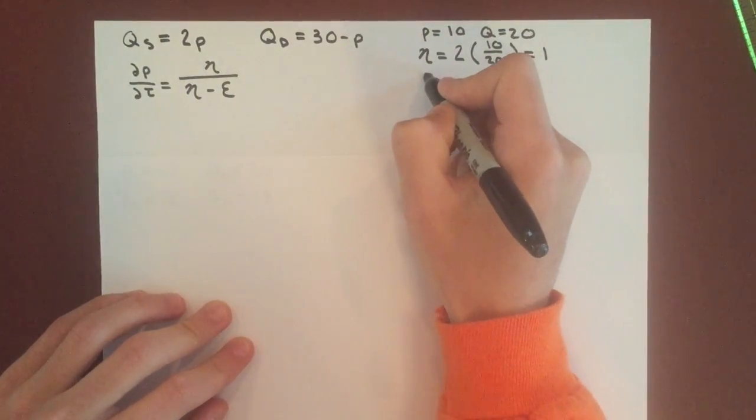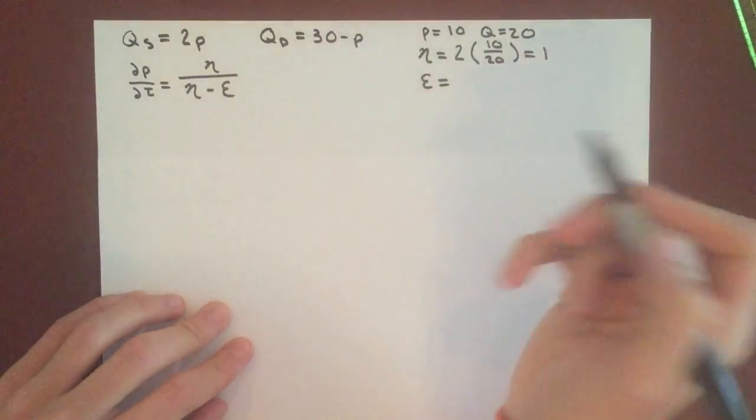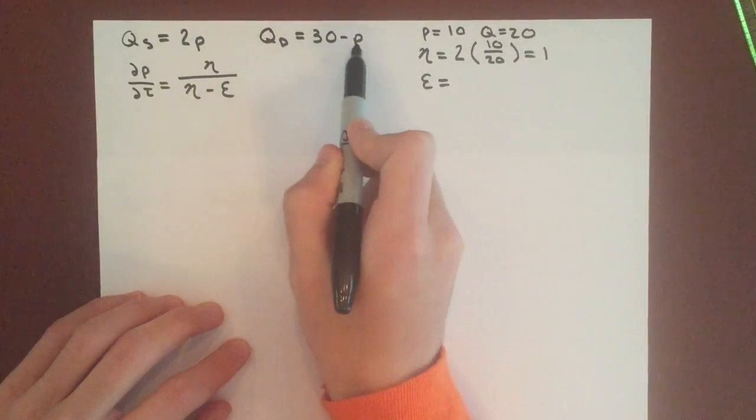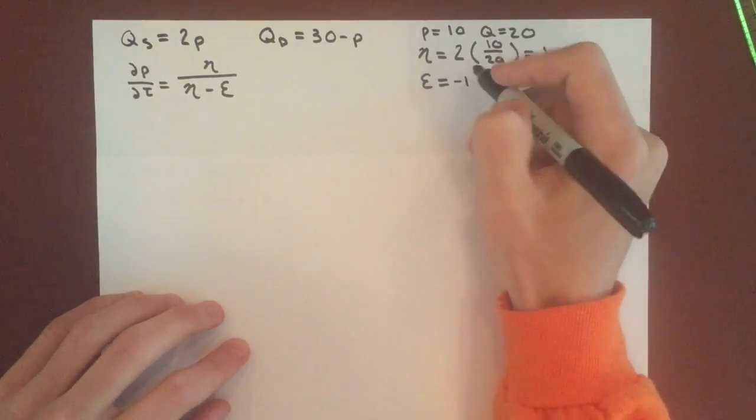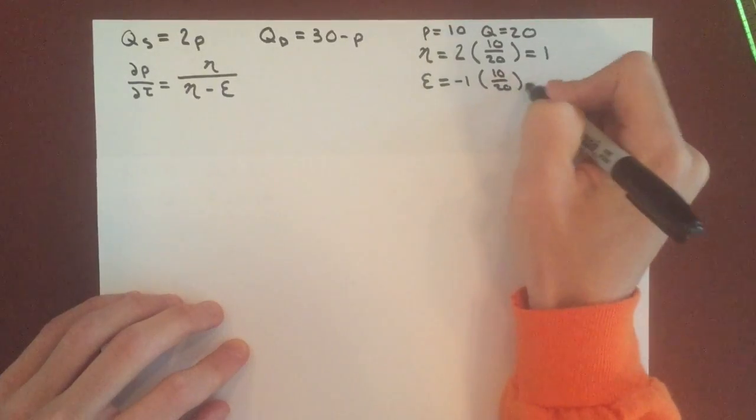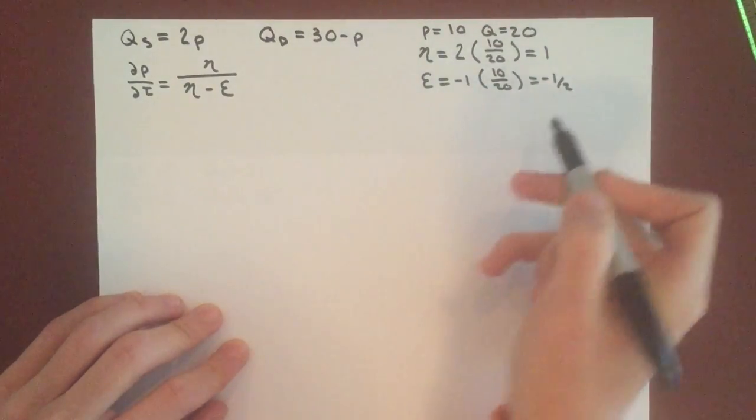The elasticity of demand: we take the derivative of demand with respect to p. That's negative 1, then multiplied by price over quantity, which gives us negative 1/2.